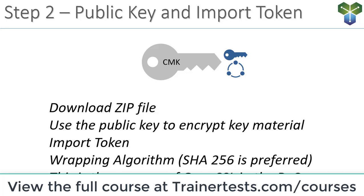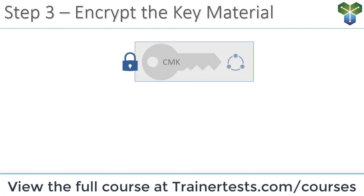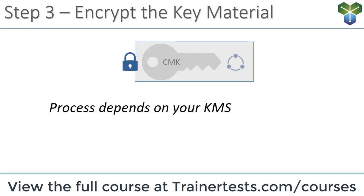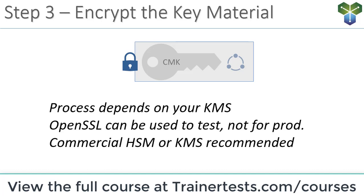If you follow along with the documentation for a proof of concept, OpenSSL is used to actually encrypt the key material. In step three, you download the public key and token, then use them to encrypt your key material. In a production environment, the approach depends on which KMS solution you're using — OpenSSL is suitable for testing only. A commercial HSM or KMS is recommended to encrypt key material in production.